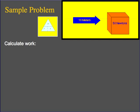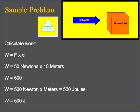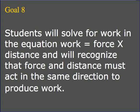Here's your sample problem. We have a box that weighs 50 newtons and we're going to move it 10 meters. Work is equal to force times distance. The force is 50 newtons, the distance is 10 meters. 50 times 10 equals 500 newton meters, which is also known as 500 joules. So we write the answer as 500 J.